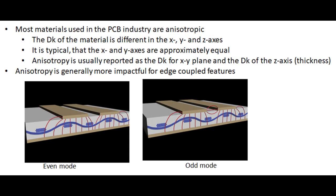Shown here is information regarding anisotropy. It's very common for materials used in the printed circuit board industry to have anisotropy, which basically means that the DK is not the same on the X, Y, and Z axes of the material. Typically the X and Y axes are assumed to be equal for dielectric constant, and that's generally true. However, the Z axis — the thickness axis of the material — usually has a different dielectric constant value than the XY plane. So DK is normally reported as XY plane versus DK in the Z axis.